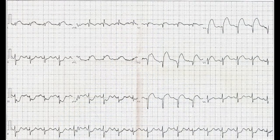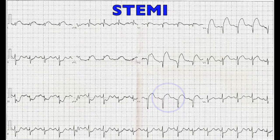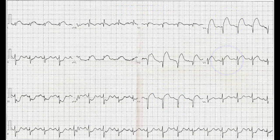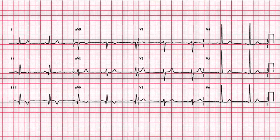The EKG seen here has a noticeable sign of ischemia called ST elevations — a STEMI. The elevations can be seen in leads V2 through V5, so this is an anterior STEMI. In this next EKG you can see T wave inversions in the inferior leads 2, 3, and aVF. If this is different from a previous EKG, it is a concerning sign for cardiologists.